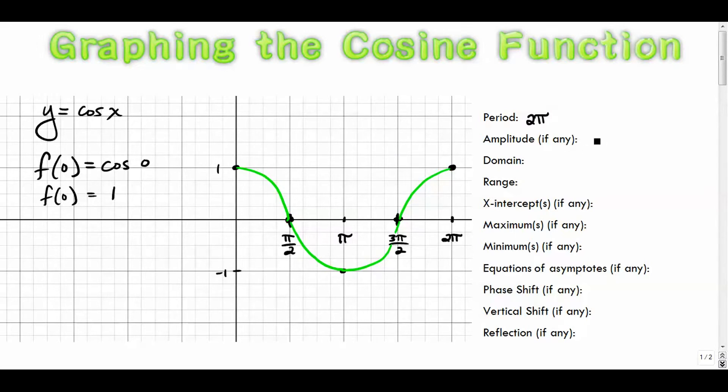The amplitude is sort of the height or half the height of the graph. So if you look at the whole height as two, half of that is one. Another way to think of that would be what's the distance between the x axis and the top of our graph. Well, that's one unit. That's called your amplitude.